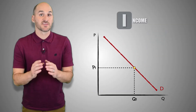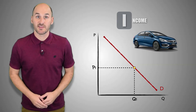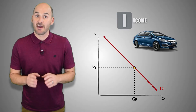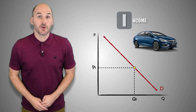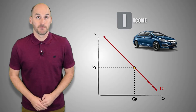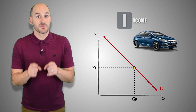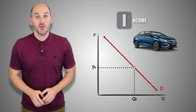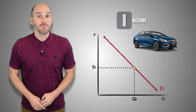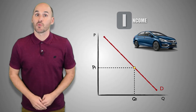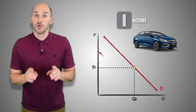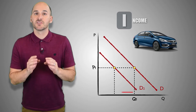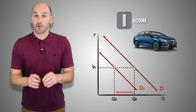Now suppose the state government raises income tax rates to pay for new roads, meaning you keep less of your paycheck after taxes, leading to a decrease in your disposable income. Now suppose you're looking to buy a new car. With less disposable income to spend, you may no longer be willing or able to purchase a car regardless of the price level — a decrease in income will cause a decrease in the demand for a good.